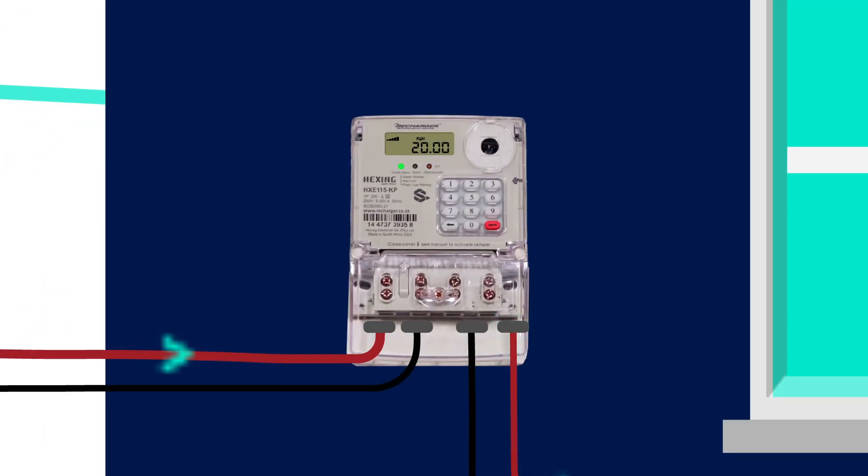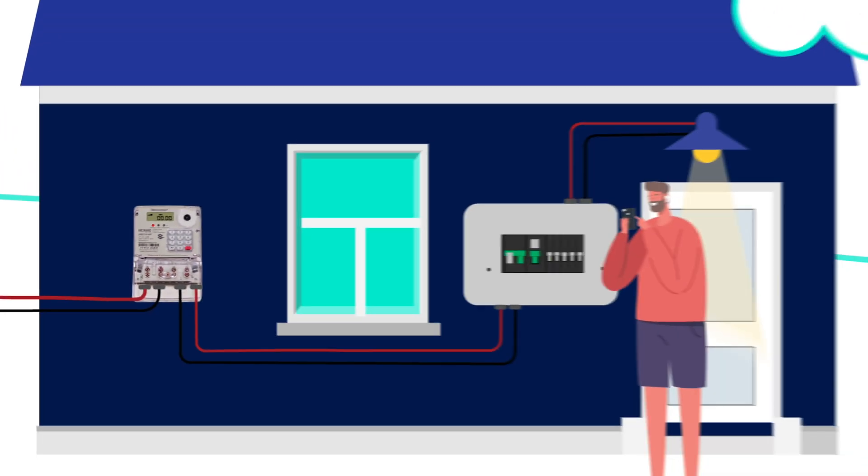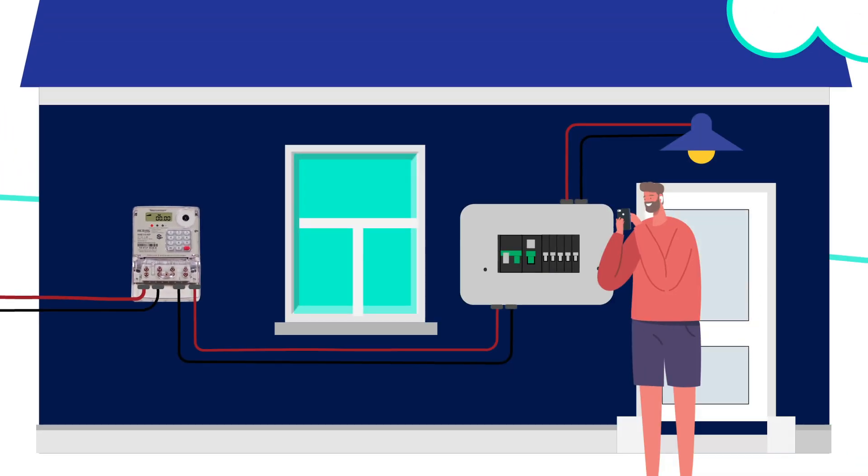Recharger meters will only supply electricity to the tenant if there are units available on the submeter. Once the units have depleted, the supply will be cut off and the tenant will then need to load new tokens to restore power.